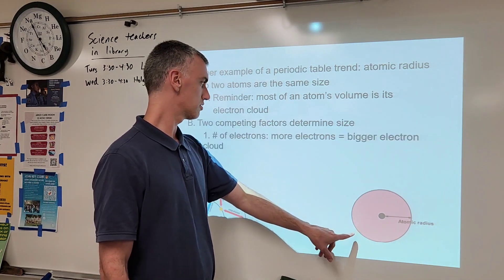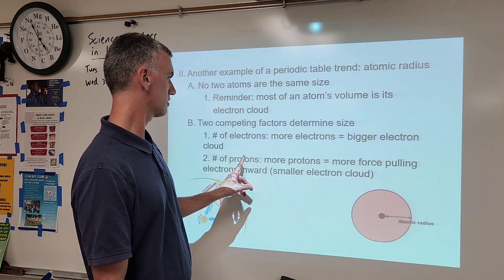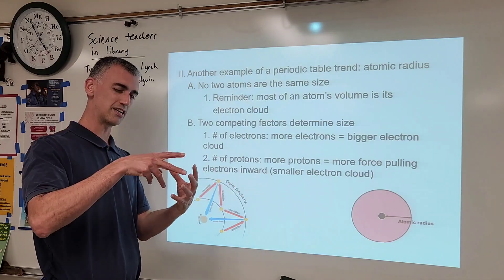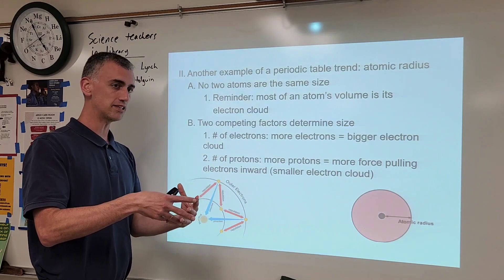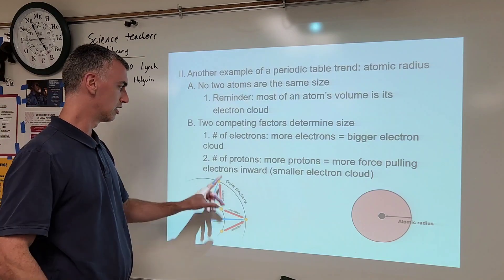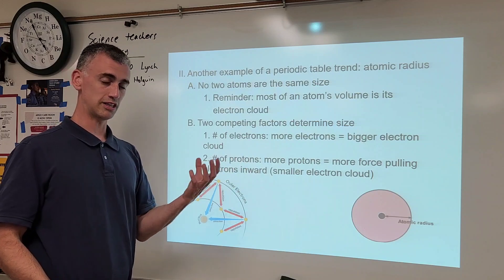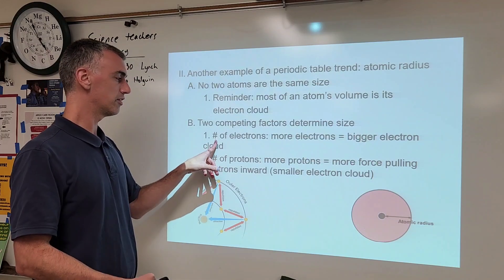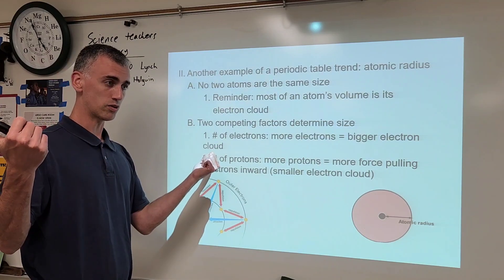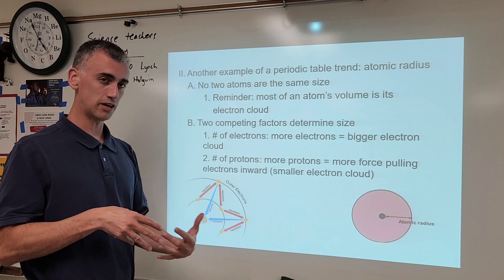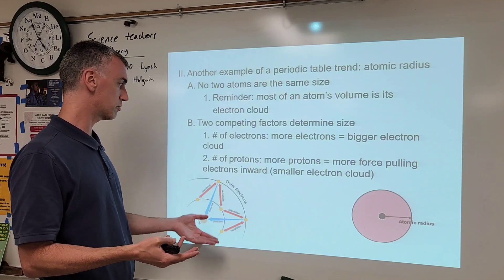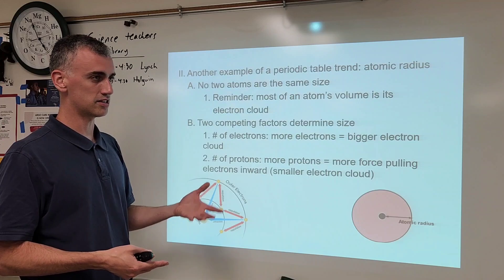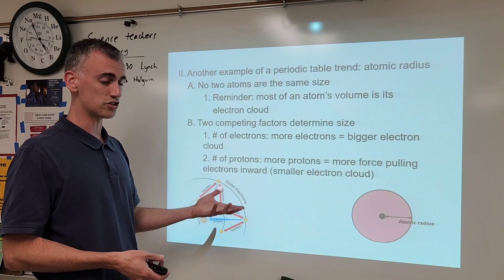Two competing factors determine size. Electrons are negative, so they repel each other and push each other further apart — the electron cloud wants to expand. But protons pull the electrons inward toward the center. So you have these competing forces: the negative charge of electrons making them want to move away, while protons pull them in. The balance of how many electrons are pushing apart versus how many protons are pulling them in determines the size. Each atom's different numbers of protons and electrons result in different sizes.